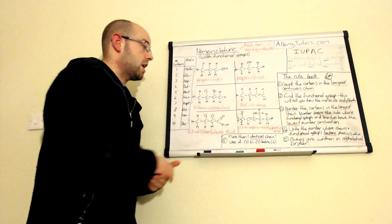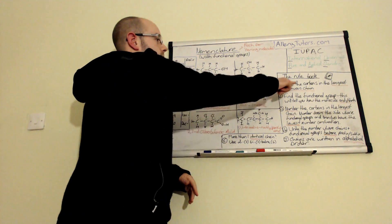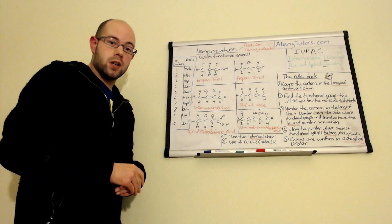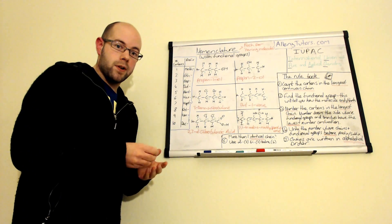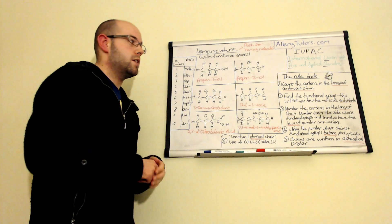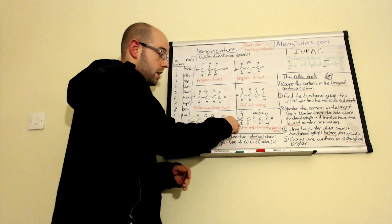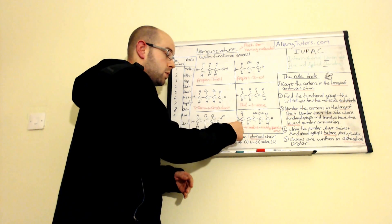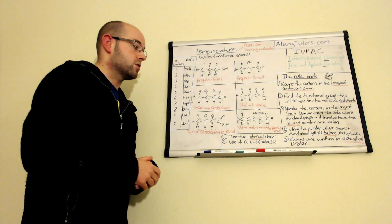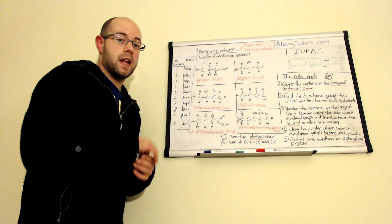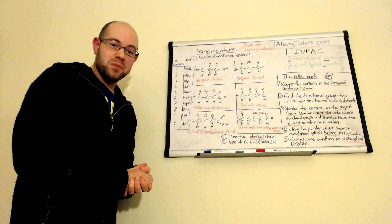That is effectively how you can name molecules. The crucial thing is to follow your longest continuous carbon chain. Once you've found that, identify your functional groups and where they are on the chain. Make sure that if you have three of the same functional group on the same atom, you write the position number three times - there's a number for each functional group. It's not good enough just to write 'one triiodo' - you have to put the 'tri' there as well. I hope that helps. Bye.